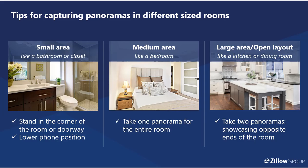Tips for capturing panoramas in different sized rooms: for a small area, you probably want to stand in the doorway and lower the phone a bit to make sure you're capturing all of the important aspects of that space, such as a bathroom or closet. In a medium-sized room, step into the room and take a panorama of the entire room, like a bedroom. If it's a large open area like a kitchen, dining room, or living area, you may end up taking two panoramas on opposite sides of the room to show details on each end.